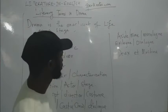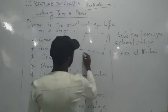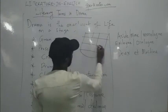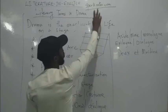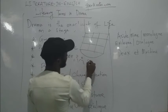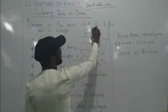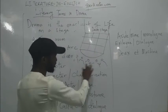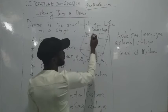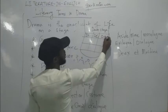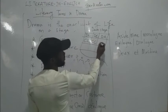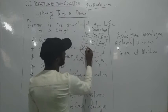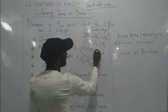Now we come to the proscenium arc. In the standard stage, the stage is divided into nine places. The area closest to the audience is called the downstage — downstage left, downstage center, downstage right. Then you have center stage left, center center, and center stage right. The area furthest from the audience is upstage — upstage left, upstage center, and upstage right.